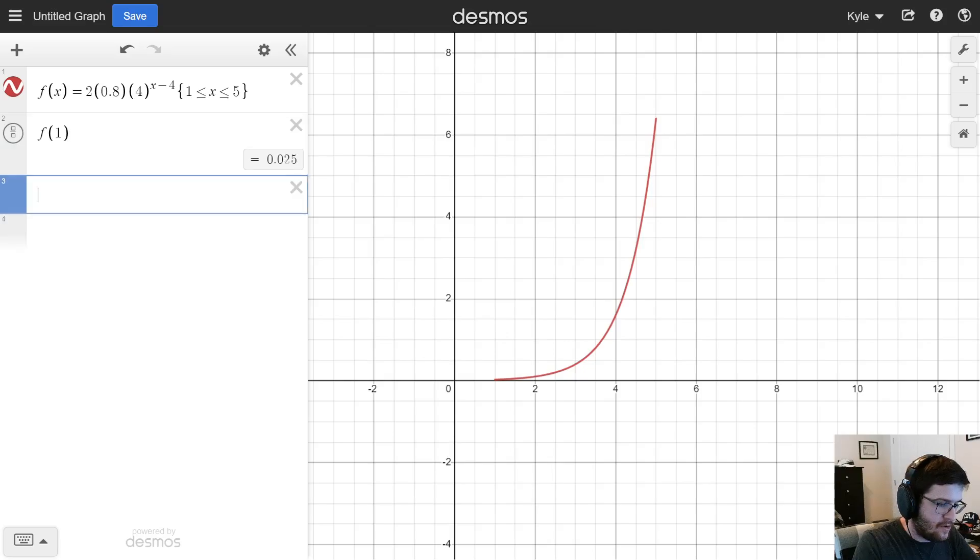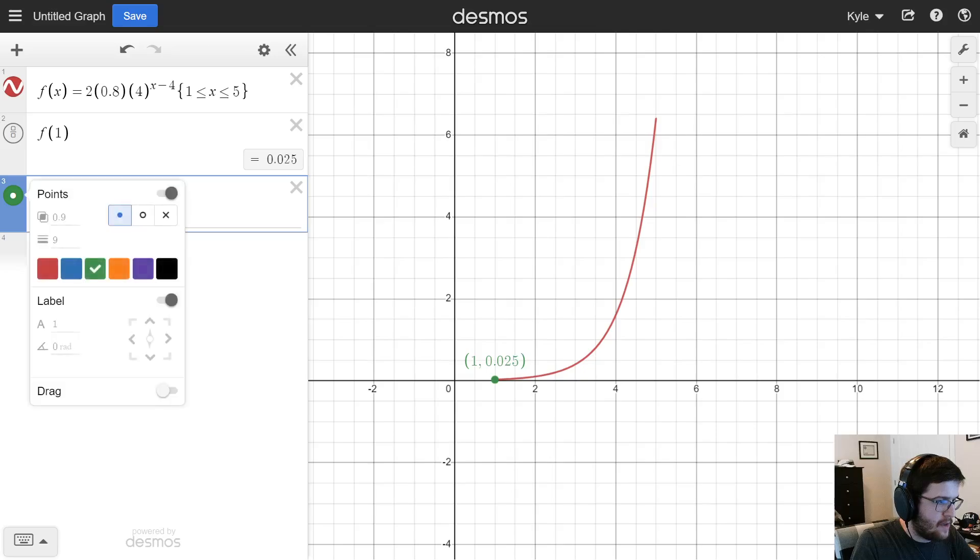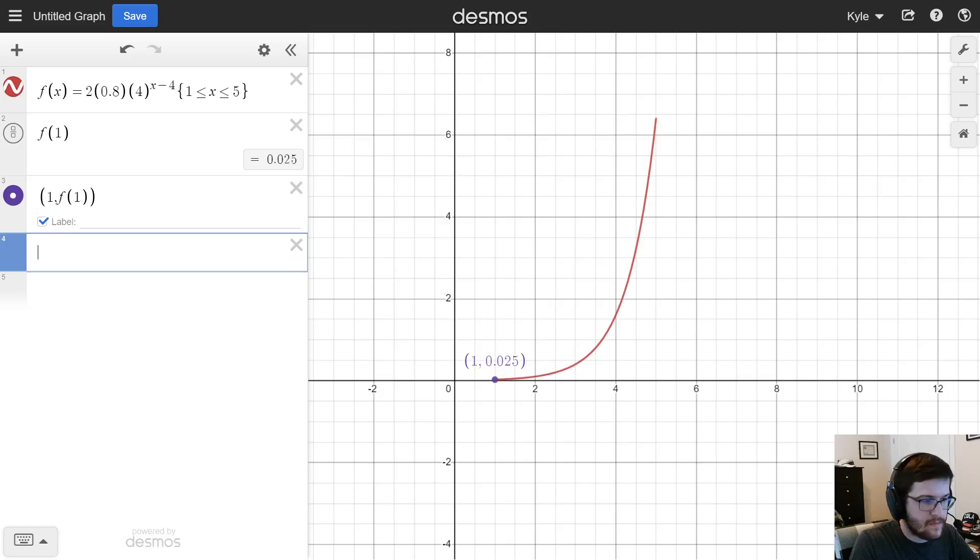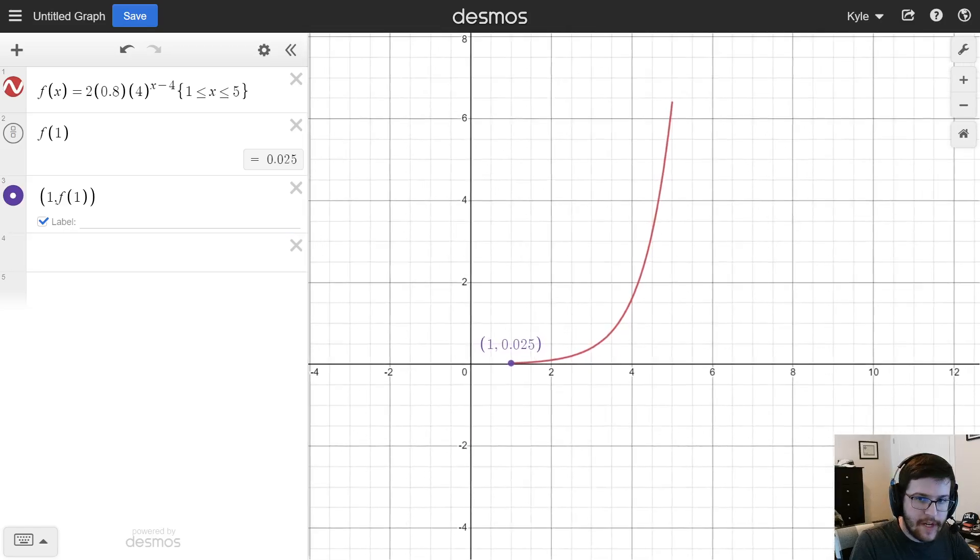And, if you want, just to kind of drive this home, we can actually plot that point. So, let's do 1 comma f(1) and hit label. And, I'm going to do that with purple. Great.